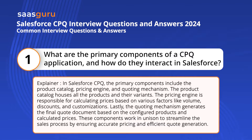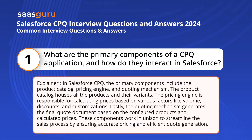The quoting mechanism generates the final quote document based on the configured products and calculated prices. These components work in unison to streamline the sales process by ensuring accurate pricing and efficient quote generation.